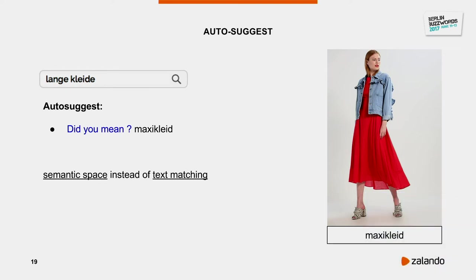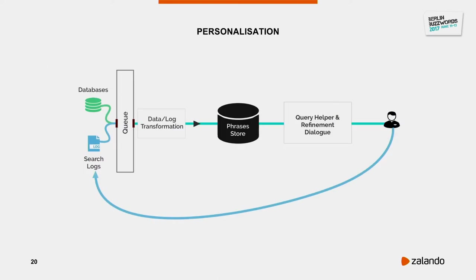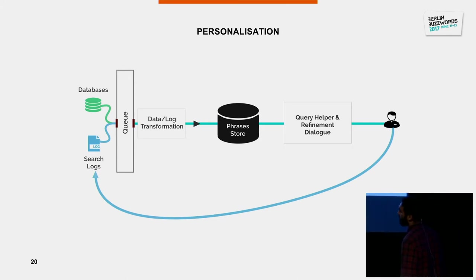Sometimes customers don't use fashion terms — not all our customers know fashion language. For example, someone might say 'longer Clyde' meaning a long dress. We use query similarity: when people refine their queries we learn that queries within the same category are semantically similar. So when someone searches for something similar, we suggest based on the semantic space we've already learned — in this case 'maxi dress' is the better fashion term. User actions are aggregated back into search logs to improve scoring.